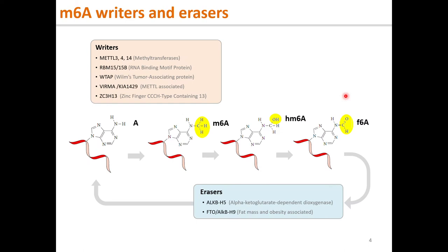Enzymatically, M6A modification is installed by writers such as METTL3, METTL4, METTL14 methyltransferases, RBM15, WTAP, METTL14, and ZC3H13. The M6A modification is reversible — it can be erased by ALKBH5 or FTO dioxygenases, first hydroxylated into hm6A, then carboxylated into formyl-f6A, and finally decarboxylated back into an unmodified adenine A.